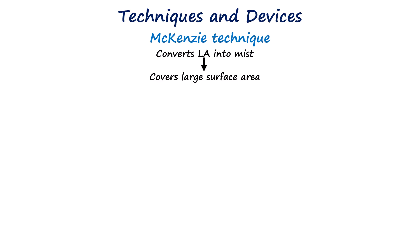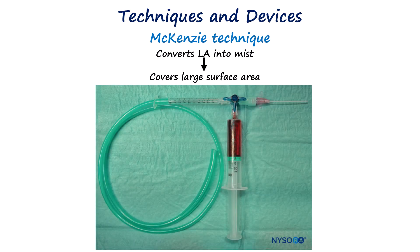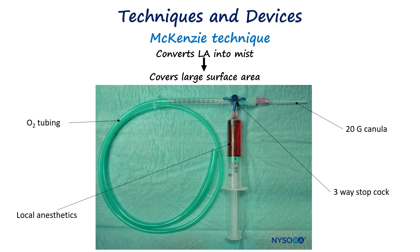Just like the mucosal atomizer device, the McKinsey technique also creates a mist or spray of local anesthetic. It involves connecting a 20-gauge cannula to oxygen tubing via a three-way stopcock. Through the remaining port of the stopcock, a syringe containing local anesthetic is connected. When the anesthetic is injected, the oxygen flow through it creates a jet-like spray, effectively dispersing the anesthetic.